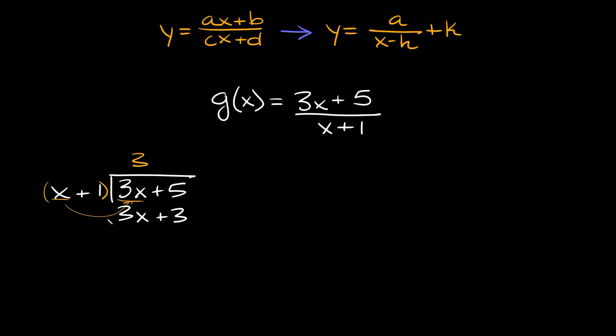All right and then the next thing we're going to do is subtract this whole thing. So 3x minus 3x that's equal to 0 and then here we have 5 minus positive 3 which is just 2. Okay so here's our remainder.